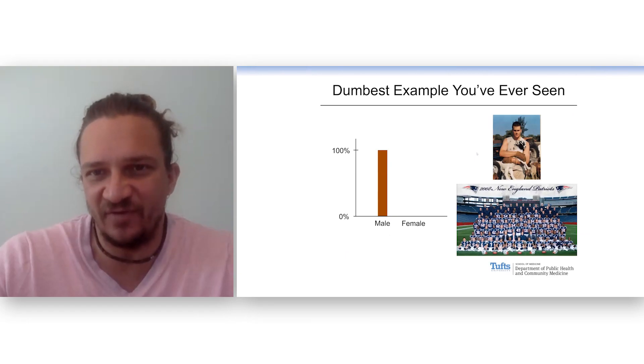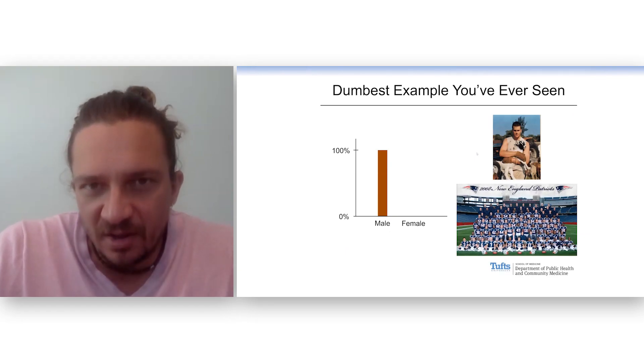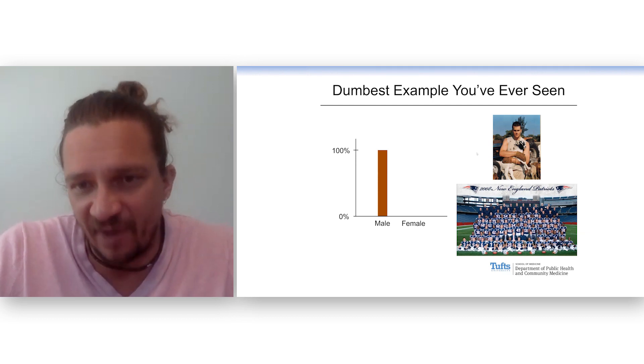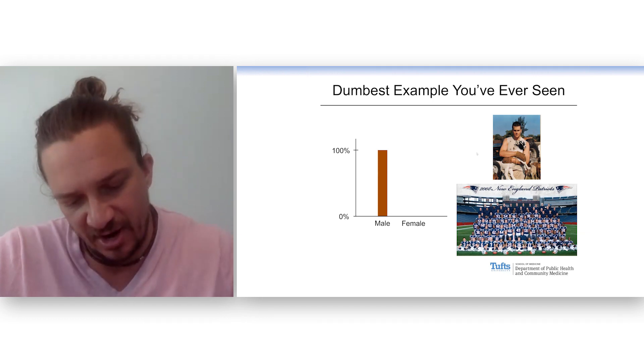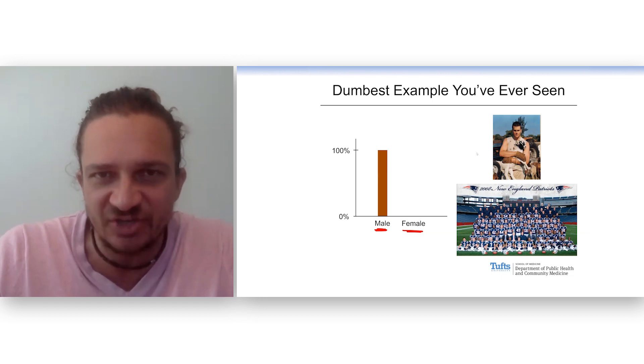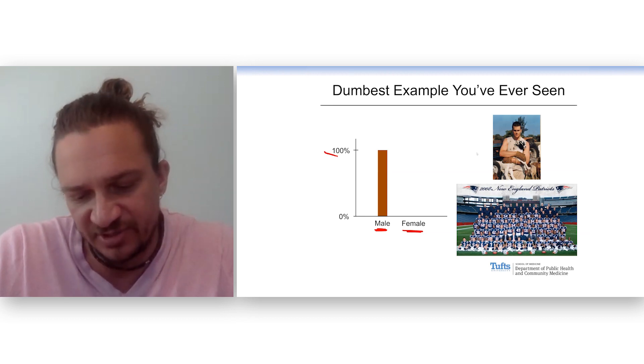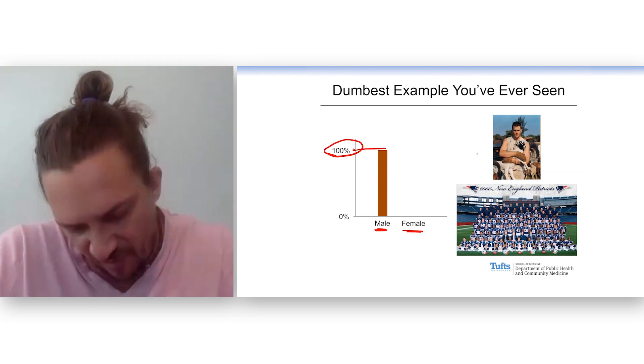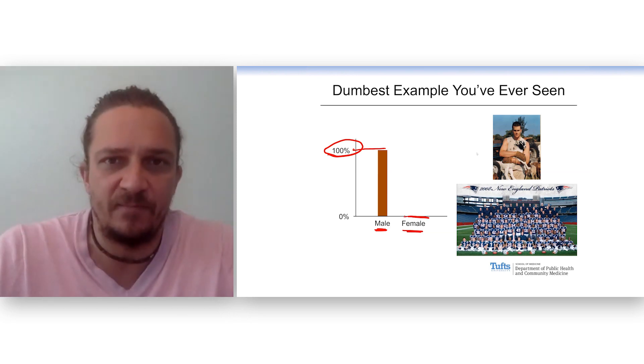All right, as promised, here's the dumbest example you've ever seen. There's a sport called football that's played in the NFL. And I went through the roster of every single NFL team and I counted up each player and collected data on whether they are male or female. And this is a bar chart that shows you the actual distribution of this variable in this population. 100% of players in the NFL are male. 0% are female. That's the actual data. This is what actually exists.